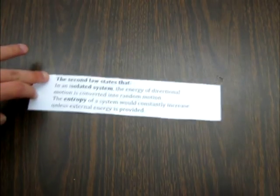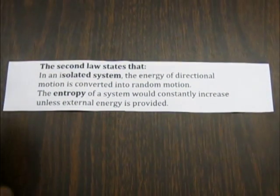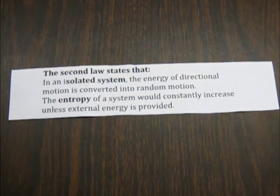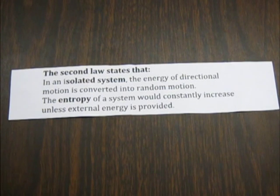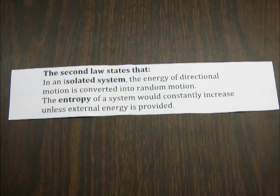The second law of thermodynamics states: in an isolated system, the energy of directional motion is converted into random motion. The entropy of a system would constantly increase unless external energy is provided.